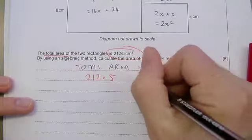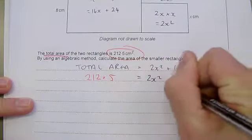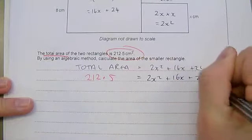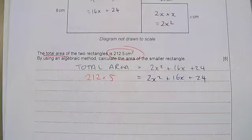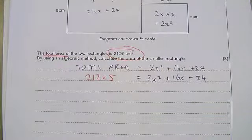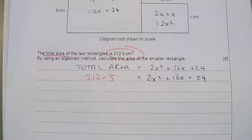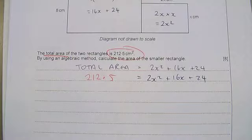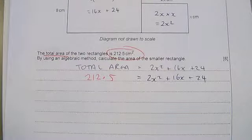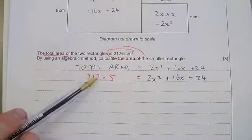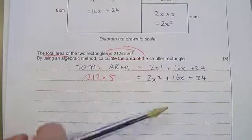We have now got this is equal to 2x squared plus 16x plus 24. Any ideas what I'm going to do next? Karan. Fantastic. So between you and Sarah, absolutely spot on.